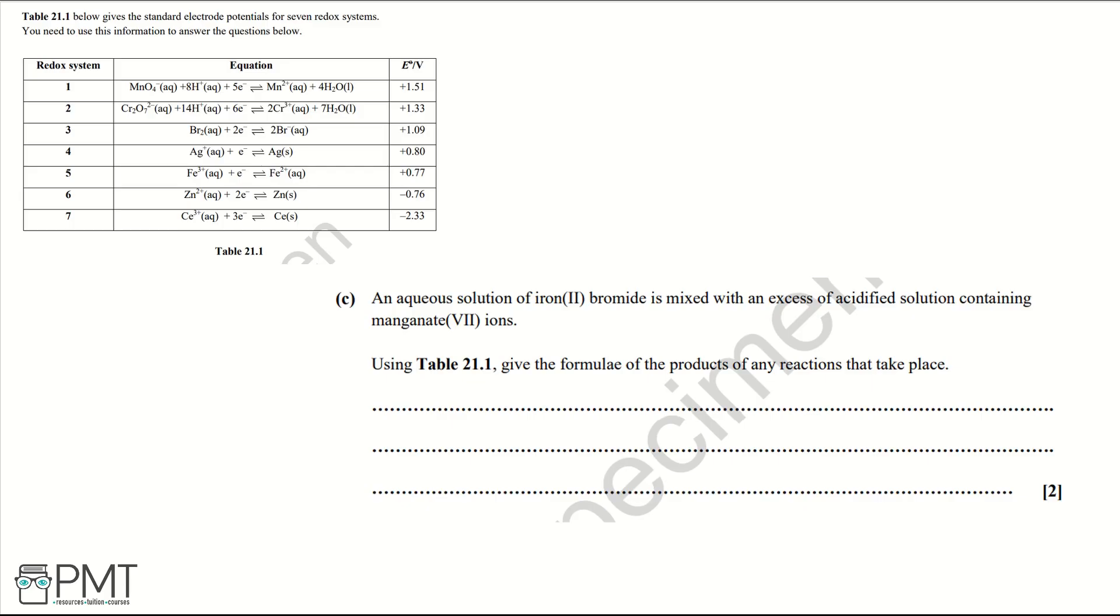The redox systems that are involved in this question are redox system 1, redox system 3, and redox system 5. What's happening is you're starting with iron 2 plus, bromine minus or bromide ions, and manganate 7 ions. Your products are going to be on the other side of the equilibrium, so they're going to be your Mn2+, your water, bromine, and Fe3+. To get the two marks for this question you must have all four products.